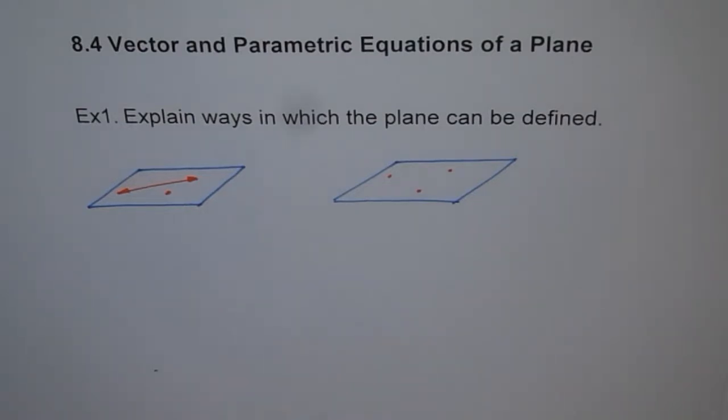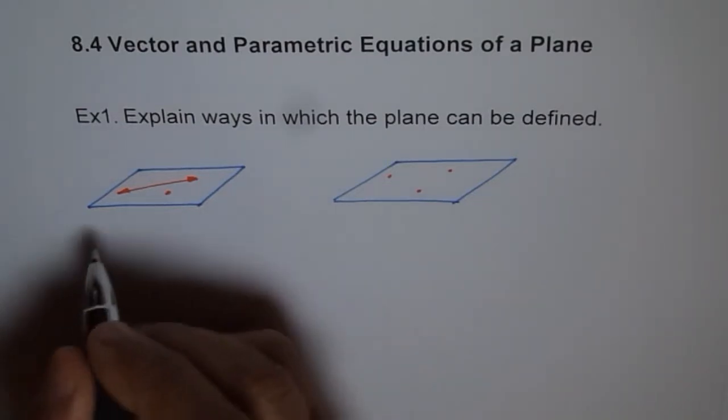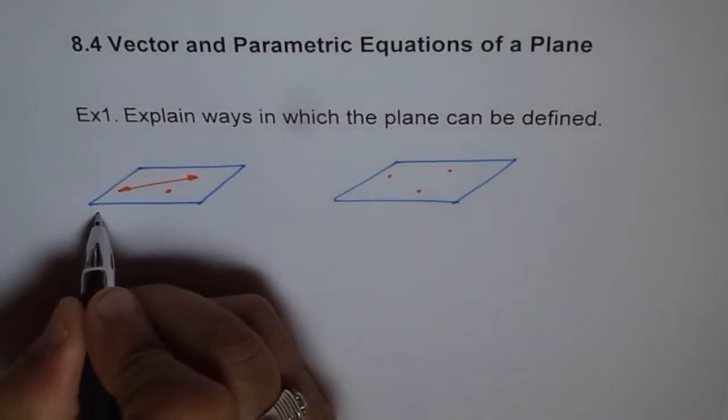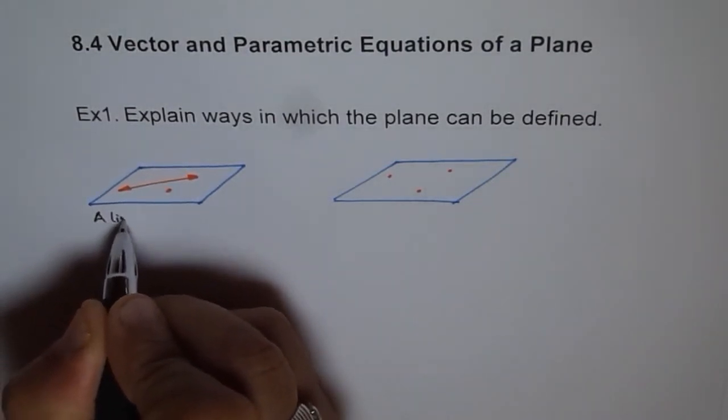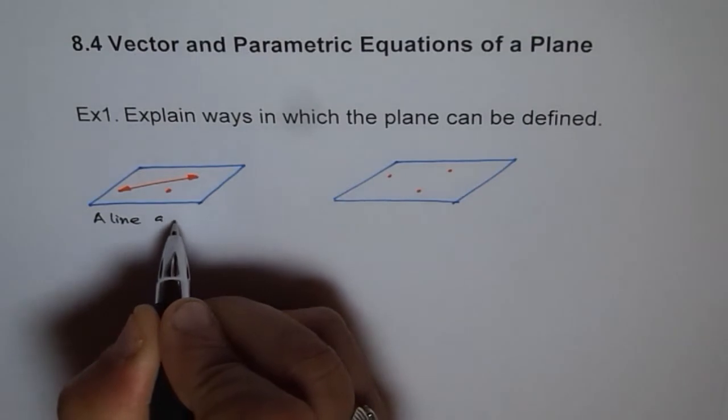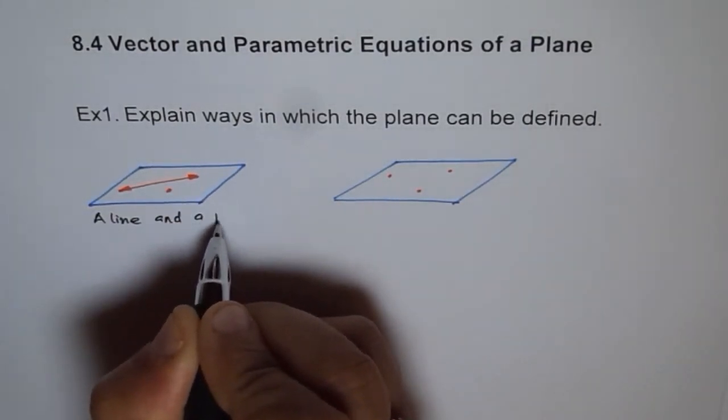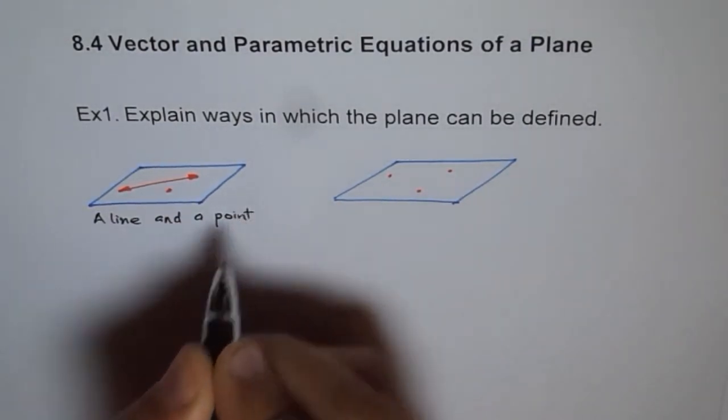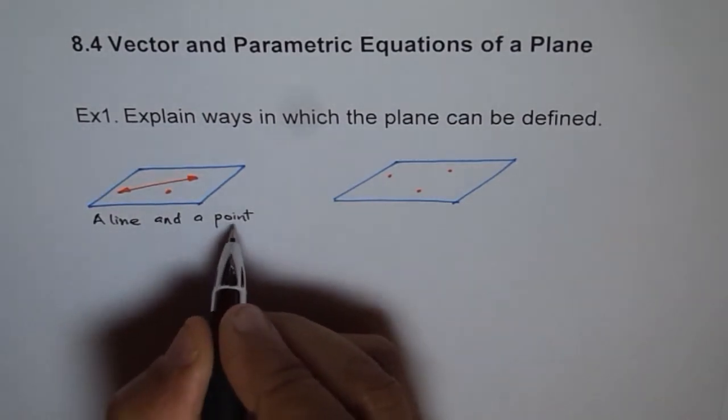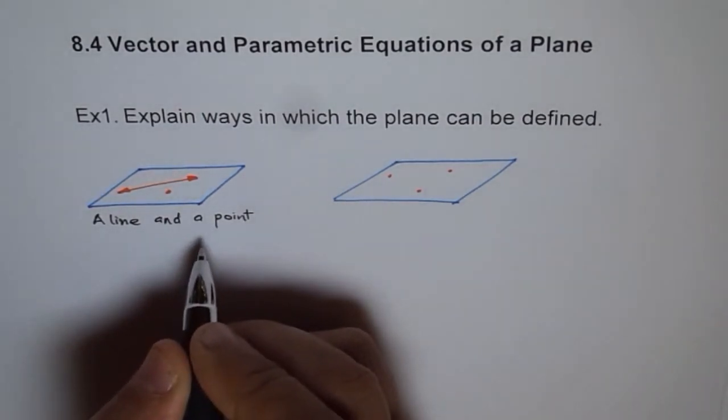So we have a line and a point. And what is necessary? Point not on the line.